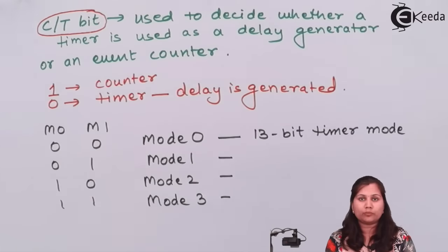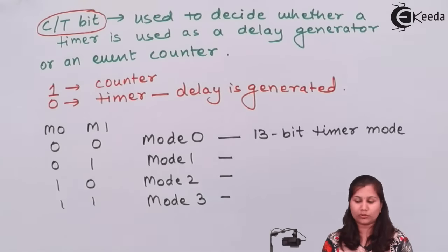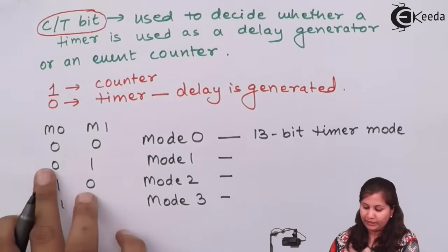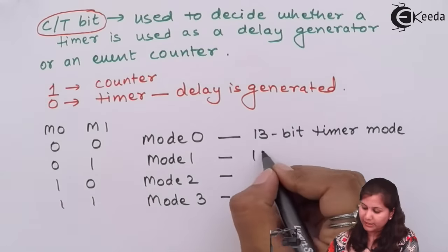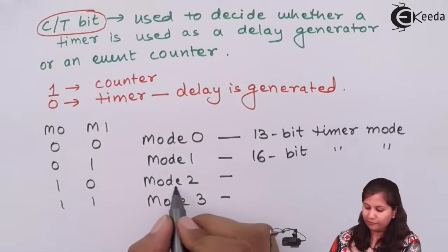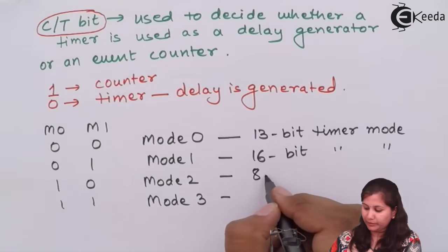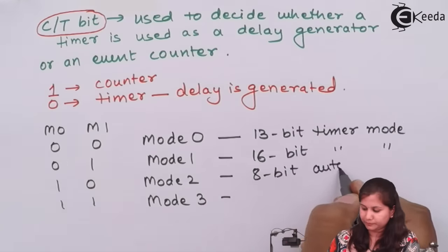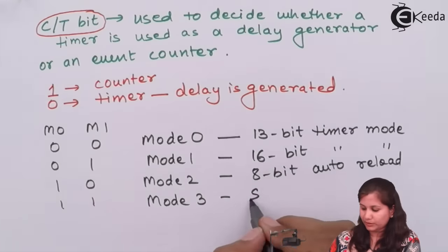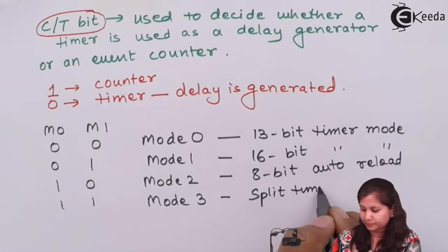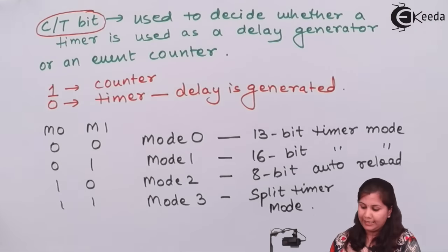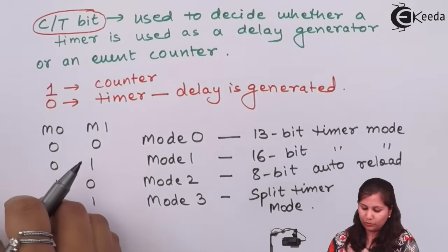When M1 M0 bits are 00, Mode 0 is selected, also known as the 13-bit timer mode. When 01, Mode 1 is selected, called the 16-bit timer mode. When 10, Mode 2 is selected, called the 8-bit auto reload mode. When 11, Mode 3 is selected, called the split timer mode. Let us study how the timers function in these modes.